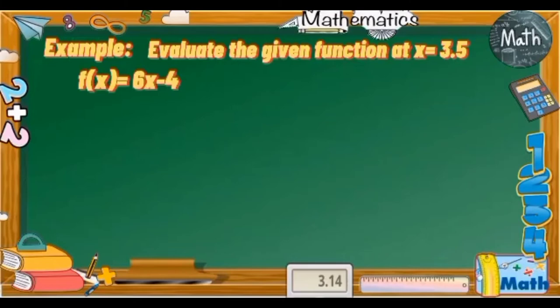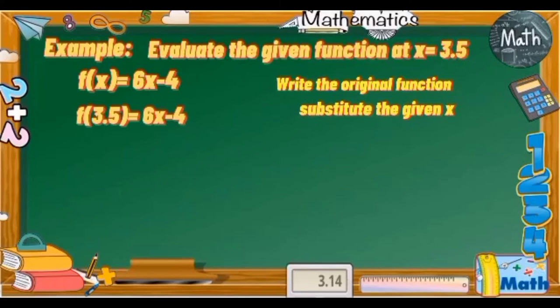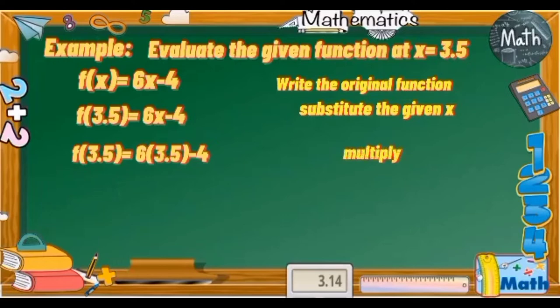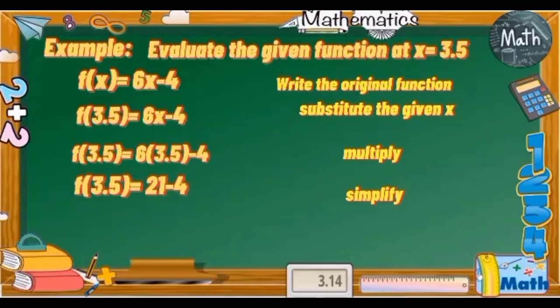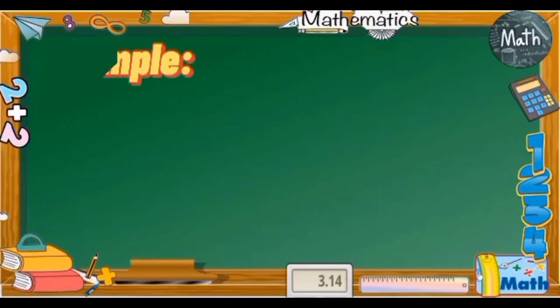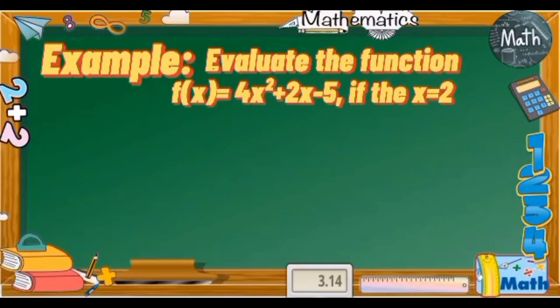Let's have another example: evaluate the given function if x = 3.5. First, write the original function: f(x) = 6x − 4. Next, substitute x with 3.5, so we have f(3.5) = 6 × 3.5 − 4. Then simplify: 6 × 3.5 = 21, giving us 21 − 4. Subtract 21 − 4 to get the answer 17. Therefore, f(3.5) = 17.